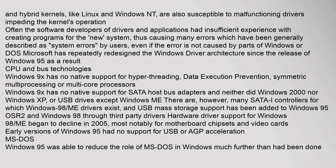Windows 9x has no native support for hyper-threading, data execution prevention, symmetric multiprocessing, or multi-core processors. Windows 9x has no native support for SATA host bus adapters — and neither did Windows 2000 nor Windows XP — or USB drives, except Windows ME. There are however many SATA I controllers for which Windows 98/ME drivers exist, and USB mass storage support has been added to Windows 95 OSR2 and Windows 98 through third-party drivers. Hardware driver support for Windows 98/ME began to decline in 2005, most notably for motherboard chipsets and video cards. Early versions of Windows 95 had no support for USB or AGP acceleration.